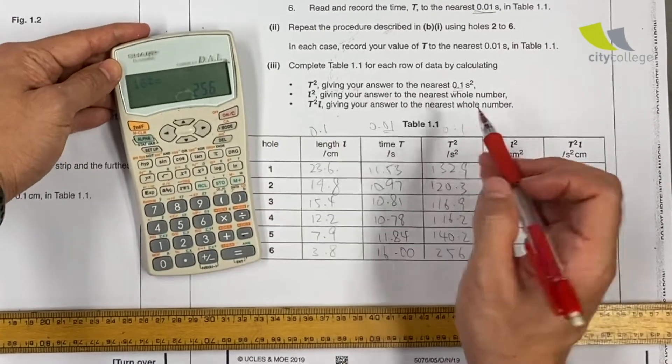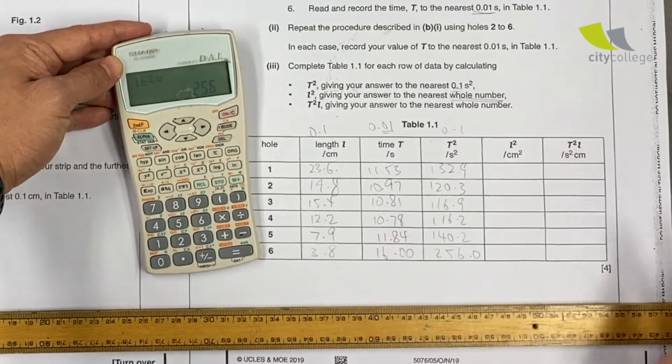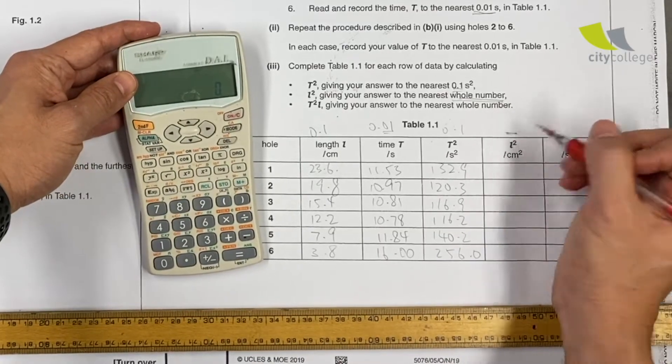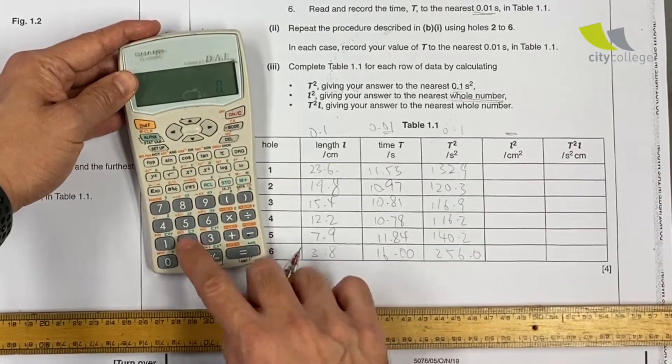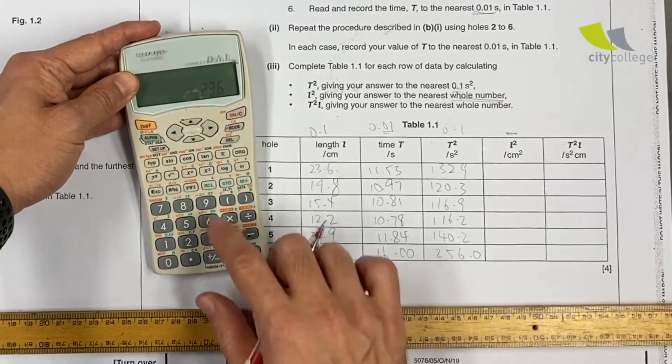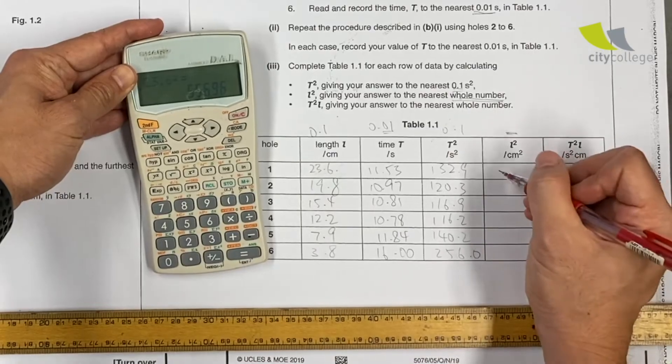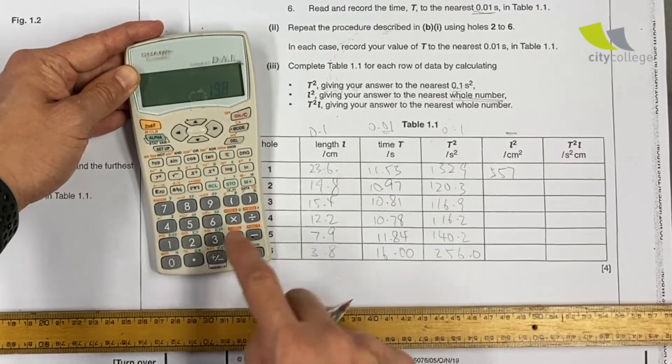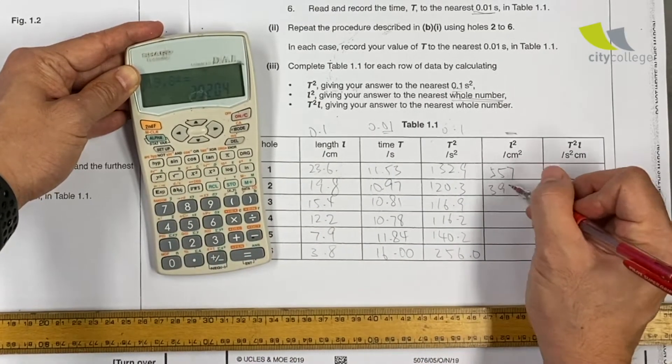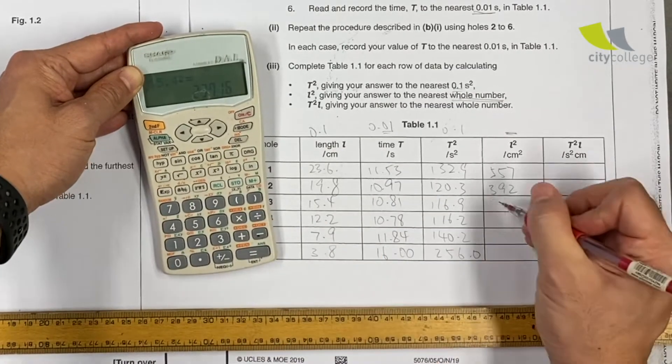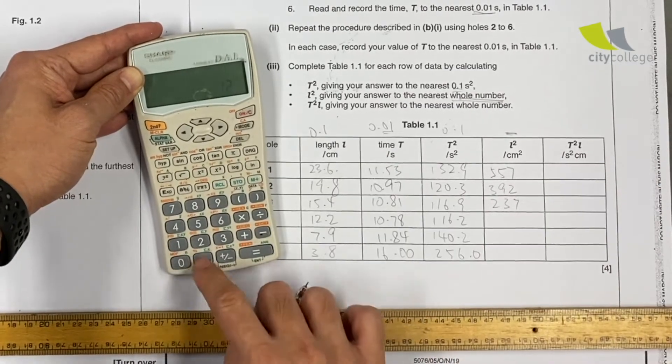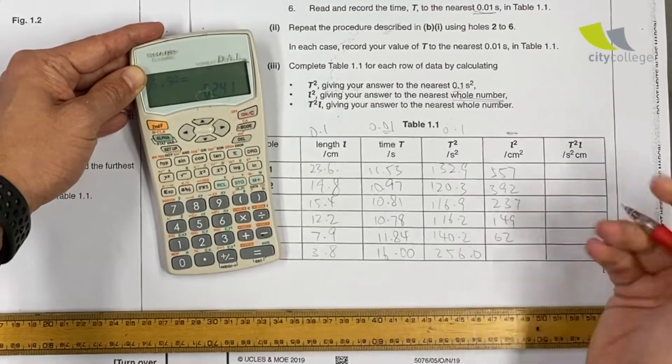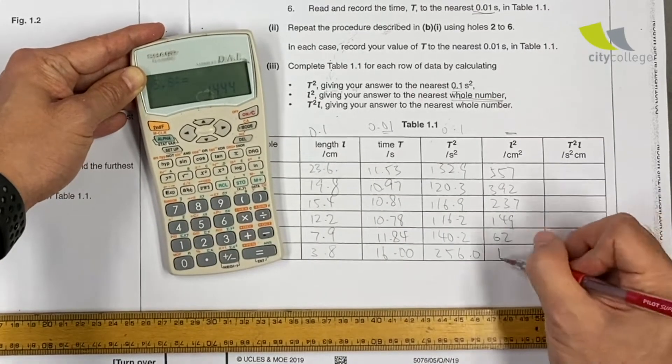Then next, L squared, nearest whole number. These are the little traps of whole number. No decimal, please. 23.6 square: 557. 19.8 square: 392. 15.4 square: 237. 12.2 square: 149. 7.9 square: 62. 3.8 square: 14. Last part.